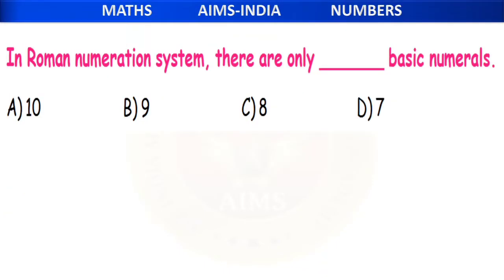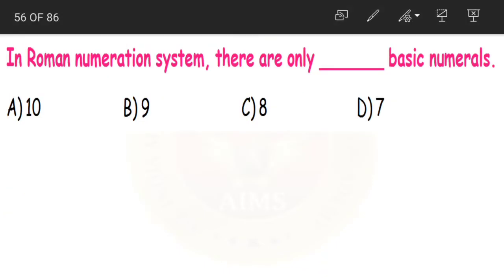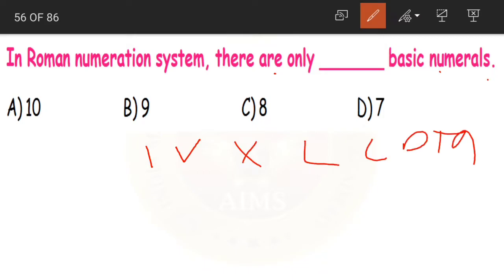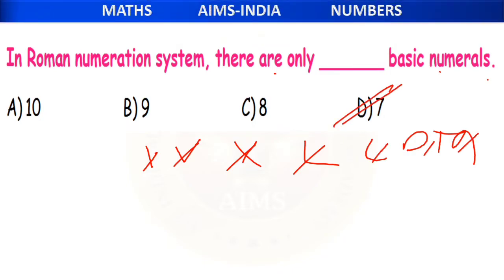Next: in Roman numeration, there are only dash basic numerals. The numerals in the Roman numeration system are I, V, X, L, C, D, M. Counting them — 1, 2, 3, 4, 5, 6, 7 — there are only 7 basic Roman numerals. With these, we can form many other numerals.